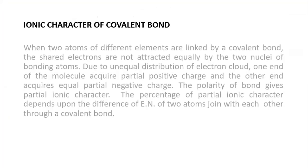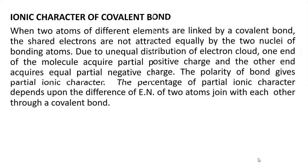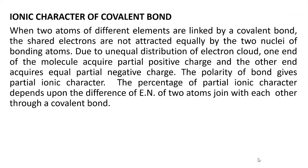Ionic character of covalent bonds. When two atoms of different elements are linked by a covalent bond, the shared electrons are not attracted equally by the two nuclei of bonding atoms — the electrons are not equally shared. Due to unequal distribution of electrons, one end of the molecule acquires partial positive charge and the other end acquires equal partial negative charge.